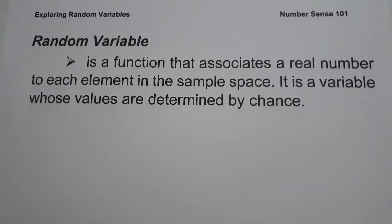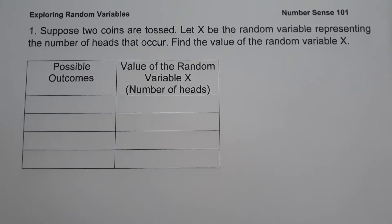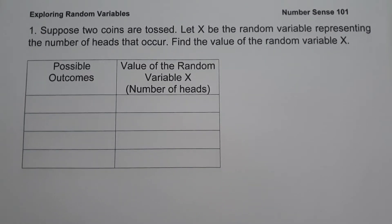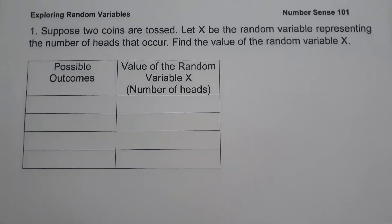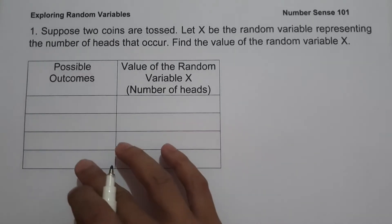Let's start with Example 1. Suppose two coins are tossed. Let X be the random variable representing the number of heads that occur. To find the values of the random variable X and to complete the given table, let us first illustrate how to find the sample space.